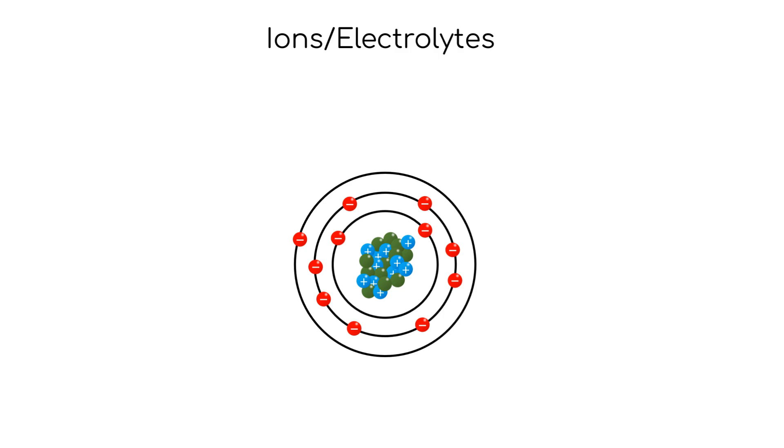For example, sodium has an atomic number of 11, which means it has 11 protons in the nucleus. Sodium also has one lone electron in its outer shell. If sodium were to lose that electron, it would then carry a positive charge.